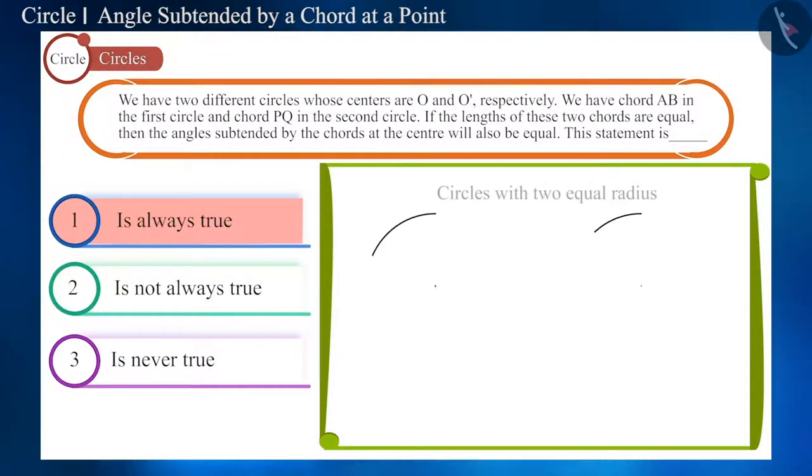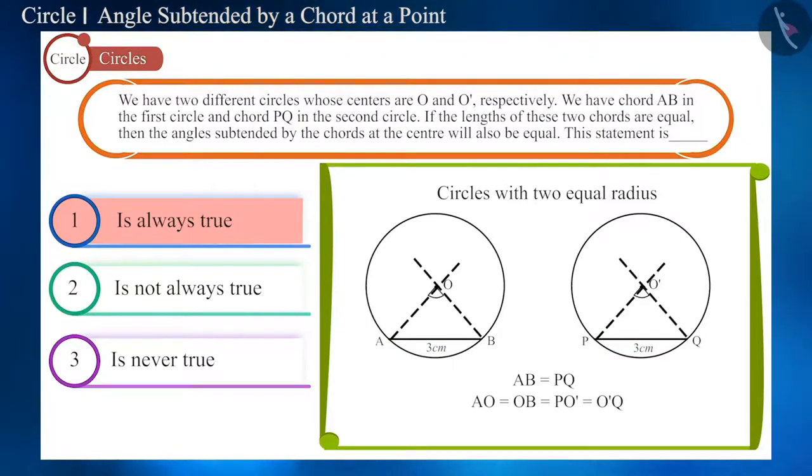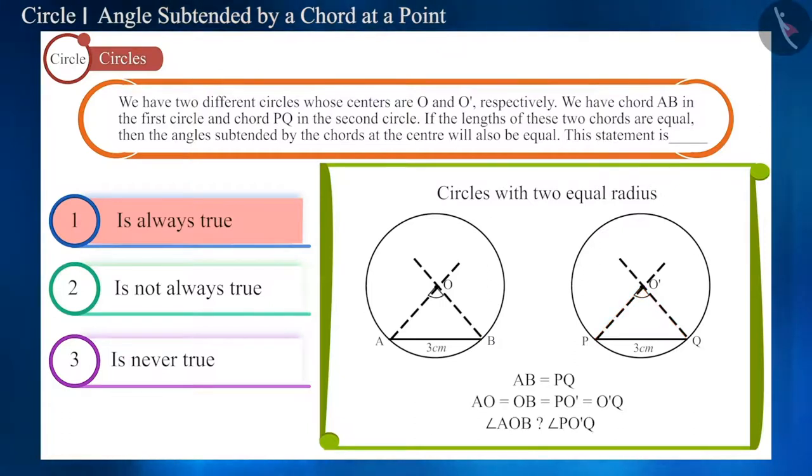If we take two circles of equal radius and draw the chords which are equal in length. Here, both AB and PQ are 3 cm in length. Will the angles subtended by these equal chords at the center, i.e. angle AOB and angle PO'Q also be equal?